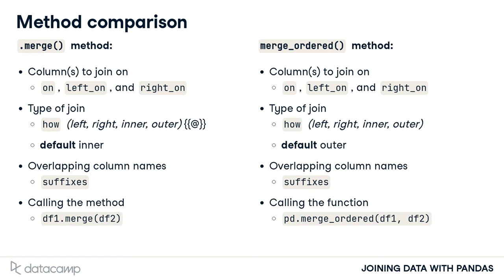Earlier in the course, we called the merge method by first listing a table and calling the method afterward. For Merge Ordered, you need to first call Pandas, then Merge Ordered. Let's look at an example.